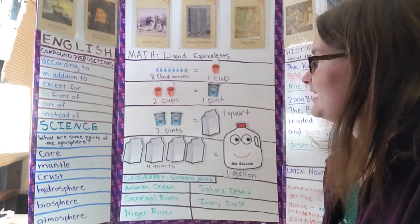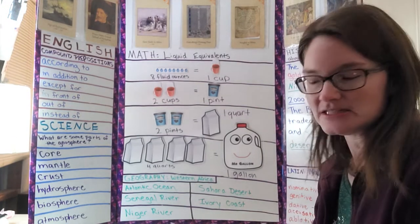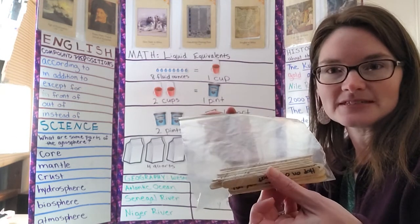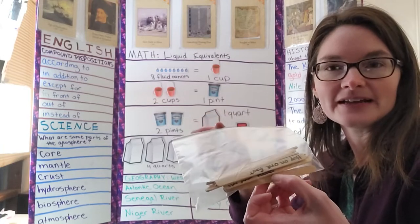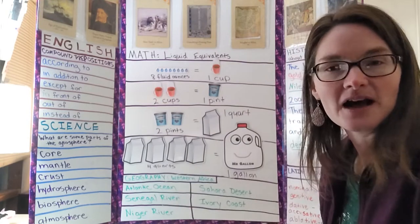For English we did our action sticks for our compound prepositions. I just take popsicle sticks and with a Sharpie I put actions or silly voices, like we pat our heads or rub our bellies, and we hop, or we use a quiet voice or a loud voice or a squeaky voice.